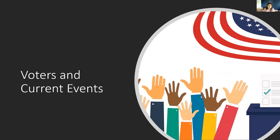After talking about the different types of governments, I think the most important part of the process is the voters themselves, because as you can see from all the hierarchies, voters really influence what government can deliver. Now I'll talk about recent voting current events in the nation and at the Georgia level.